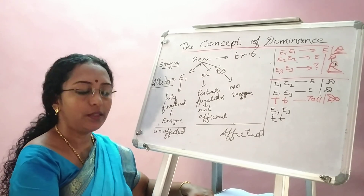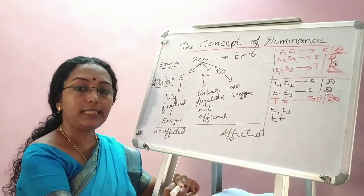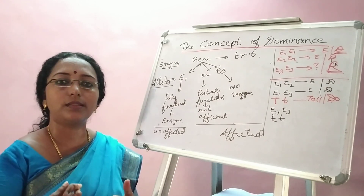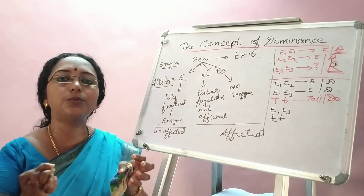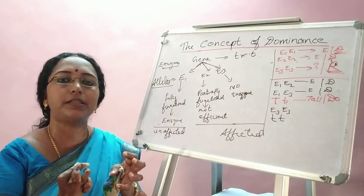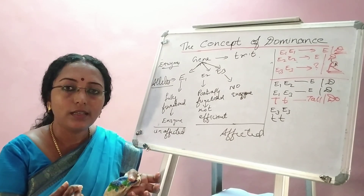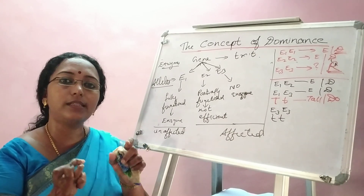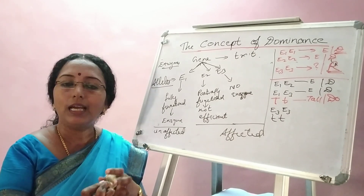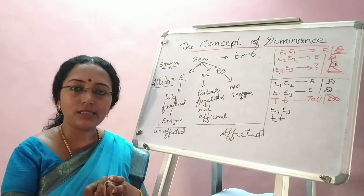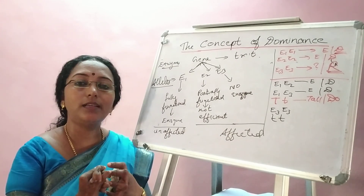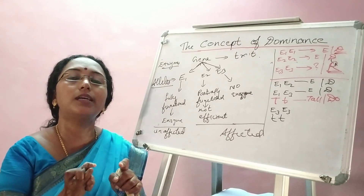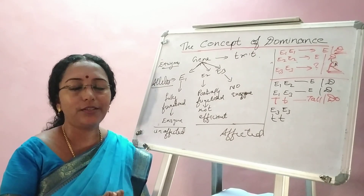Once this concept of dominance is clear, we will move on to co-dominance — where both alleles try to dominate together with the same effect. What will the trait be if both alleles are equally expressed? I'll come with examples for that, and it will be really interesting to learn what happens when two alleles dominate together. Thank you for now.